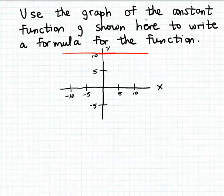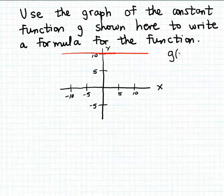In this example we're shown the graph of a constant function called g. Here's the graph and we just want to write down a formula for this function. The reason that the function g is called the constant function is that no matter what input we use, the output always remains a constant. In this case the output is always going to be ten.